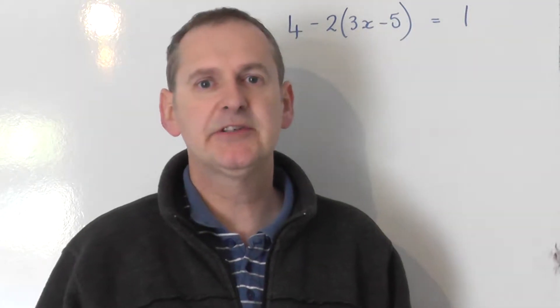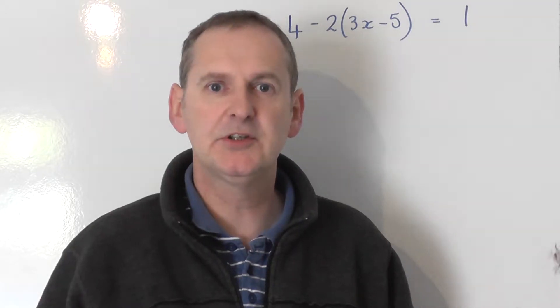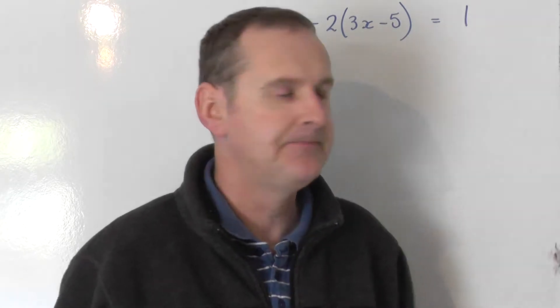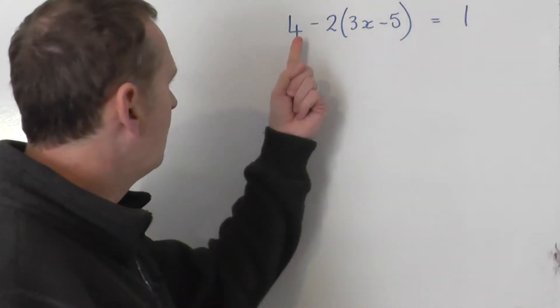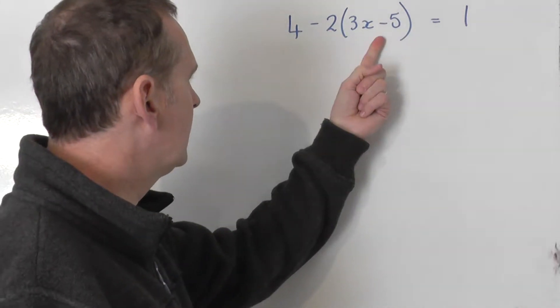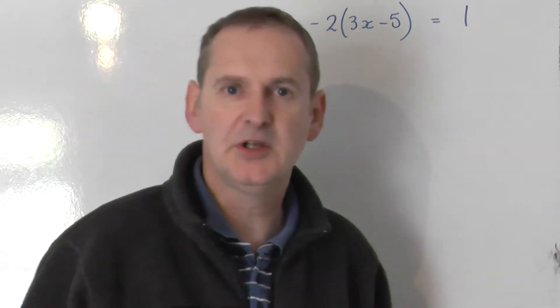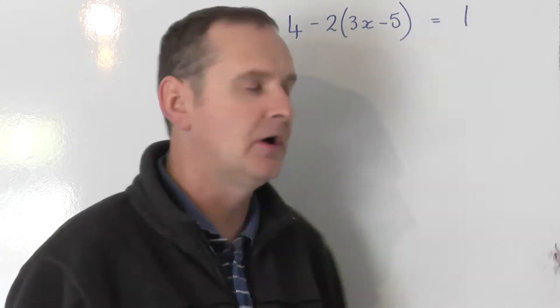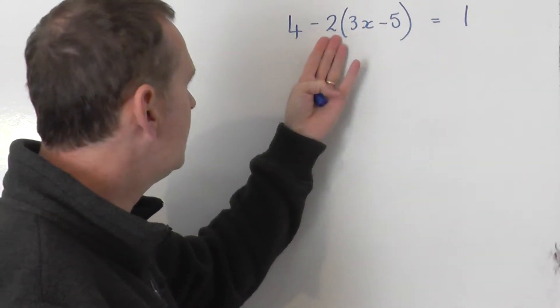On the left hand side we've got an expression with a bracket in it, so what we've got to do is expand out the bracket to get rid of the bracket. Be careful, we've got 4 take away 2 lots of the bracket. You do not work out 4 take away 2 to give 2 and then multiply 2 lots of the bracket. What we've got is 4 take away 2 lots of the bracket.